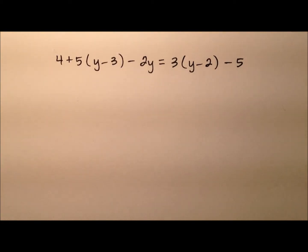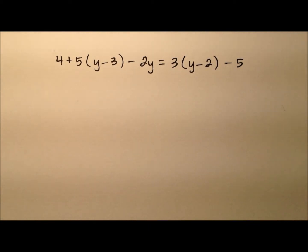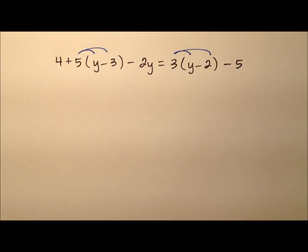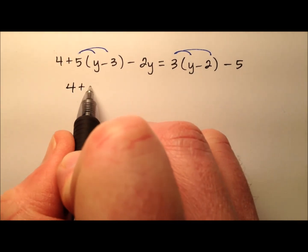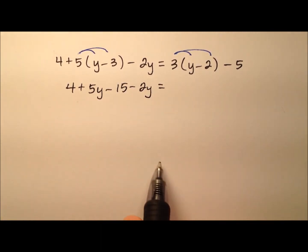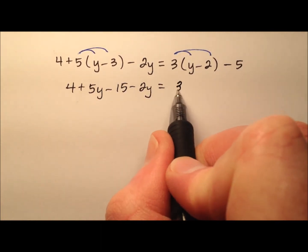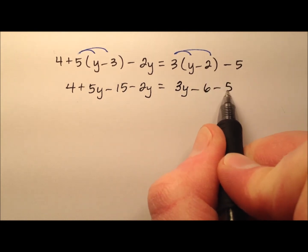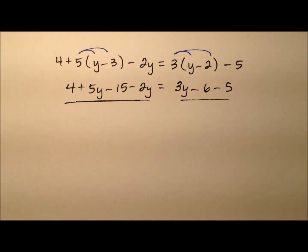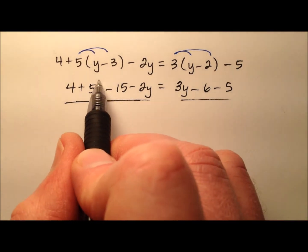Let's go ahead and take a look at this second example. Same kind of thing — if you'd like to try this first, go ahead and pause the video and do so, and then come on back and we'll work it together. Once again I notice I have parentheses, so let's use our distributive property and do some simplifying. It looks like 4 plus 5y minus 15 minus 2y on the left side, and on the right side 3y minus 6 minus 5. We've got some like terms on the left and on the right, so let's combine everything together.